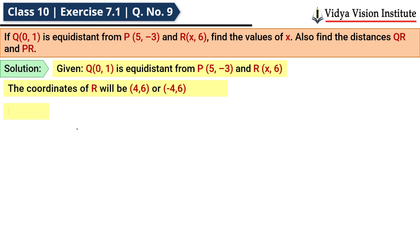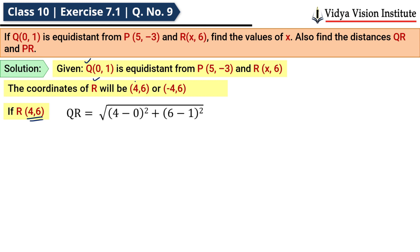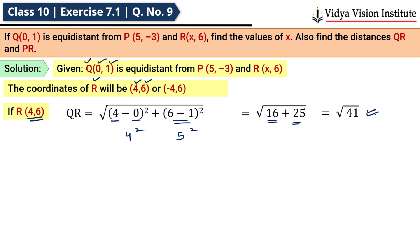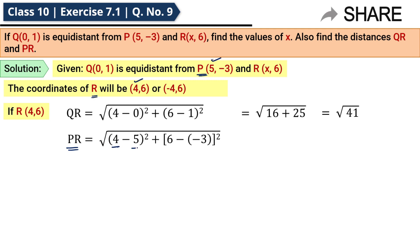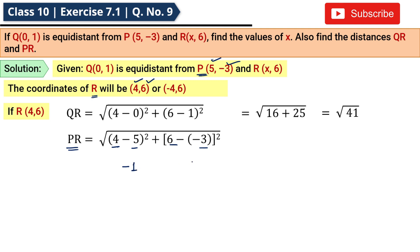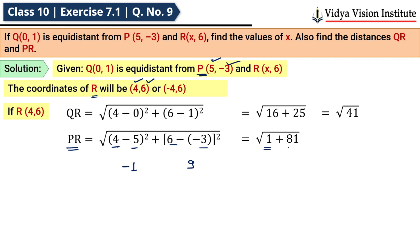Ab r ke 2 coordinates aa gaye. If R = (4,6), then QR = √[(4−0)² + (6−1)²] = √[16 + 25] = √41. Aur PR = √[(4−5)² + (6−3)²] = √[(−1)² + 9] = √[1 + 81] = √82.